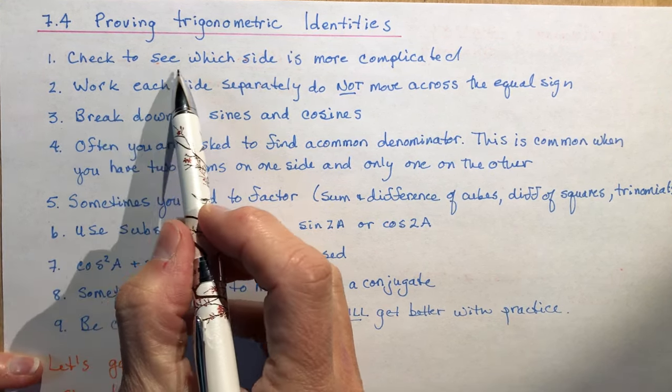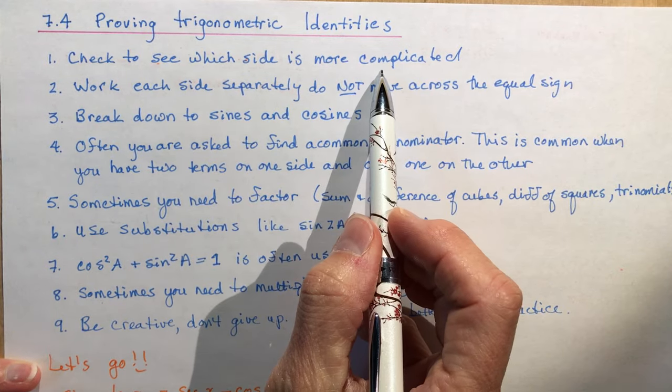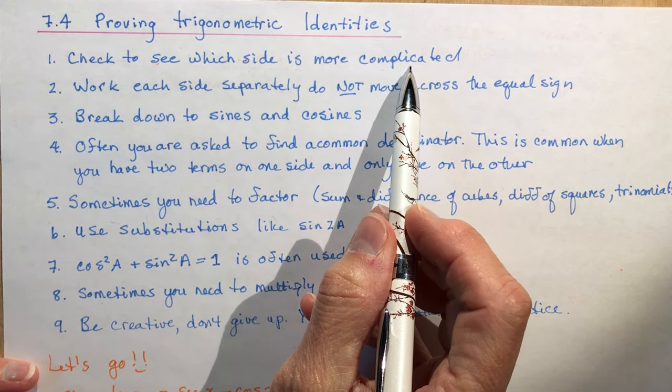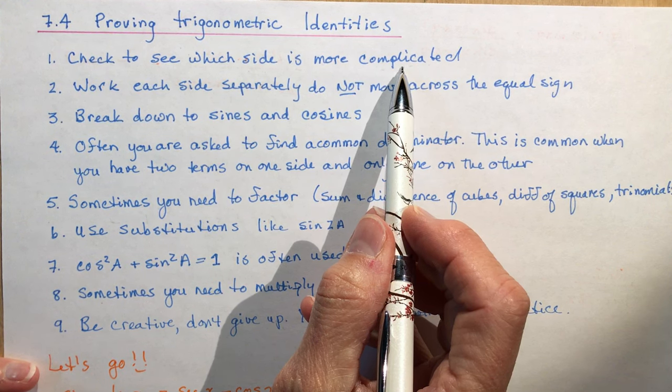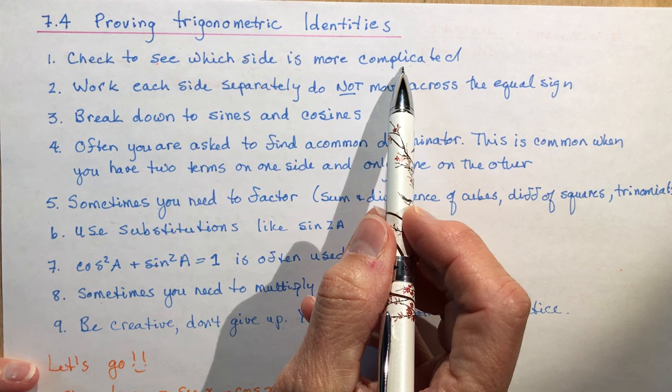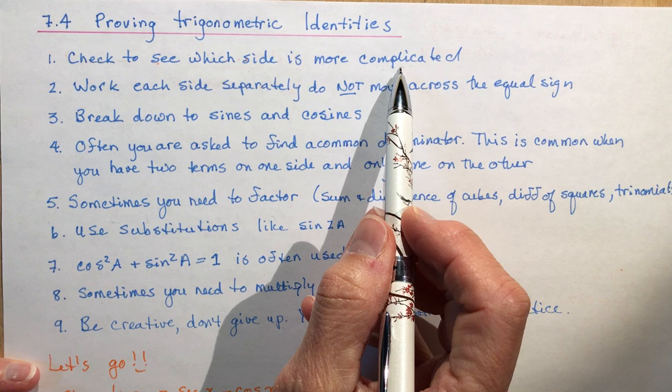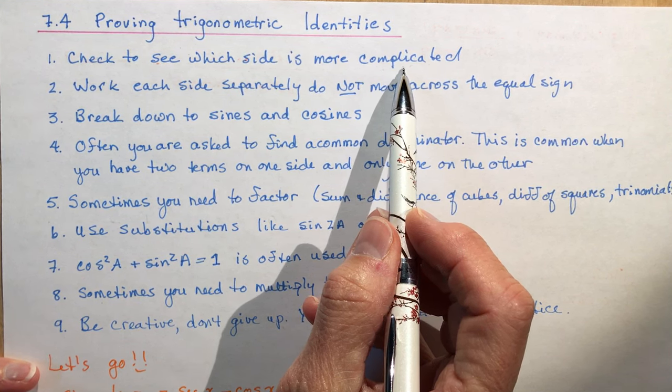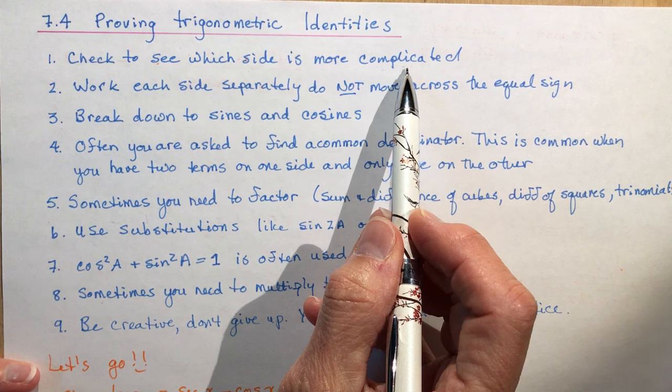Let's go over some of the rules that you should be using when you're trying to prove identities. The first thing is to check to see which side is more complicated. Now this holds true really well for the grade 11 curriculum, but in grade 12, you're still looking for the most complicated side, but at the same time you often have to work with both sides of the equation to simplify them before you see something that's similar.